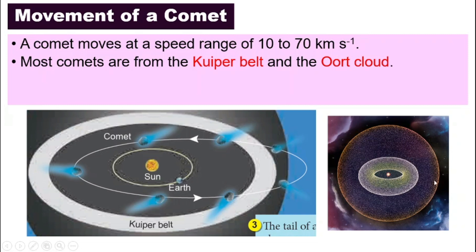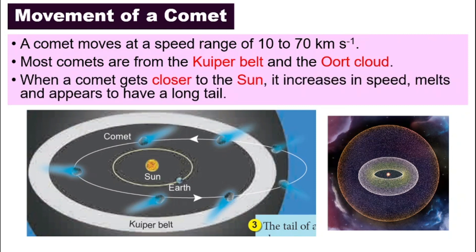How about the Oort Cloud? The Oort Cloud is almost like a big ball of cloud that surrounds and contains the whole solar system. It is believed that a lot of comets come from either the Kuiper Belt or the Oort Cloud.